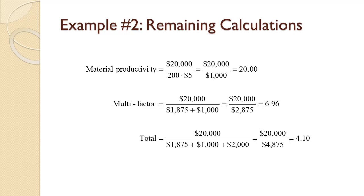For the labor and material multi-factor productivity, we add the $1,875 labor cost to the $1,000 material cost to get a combined cost of $2,875. Dividing that into $20,000 gives us productivity of 6.96, so each dollar of variable cost yields $6.96 of output.